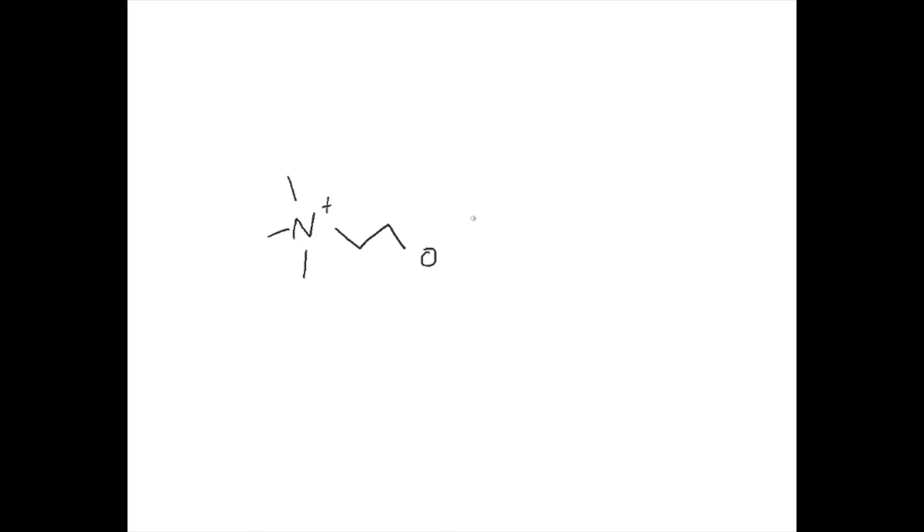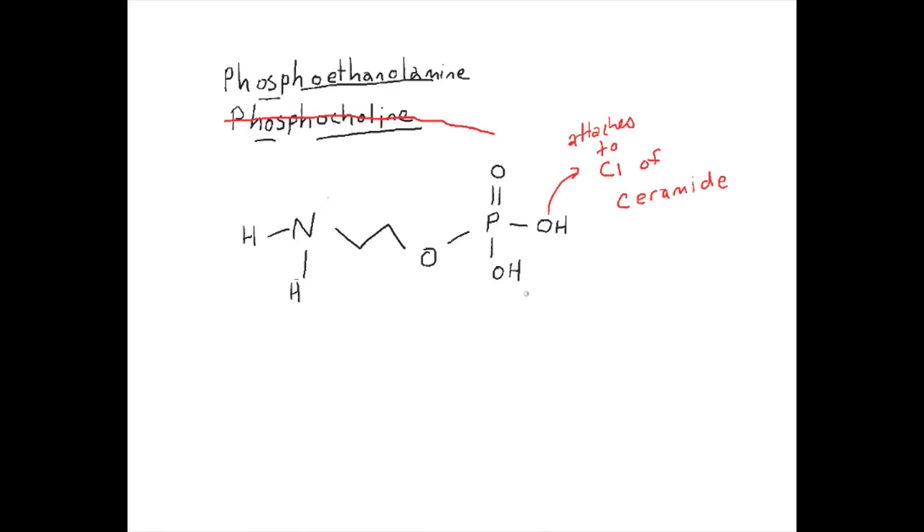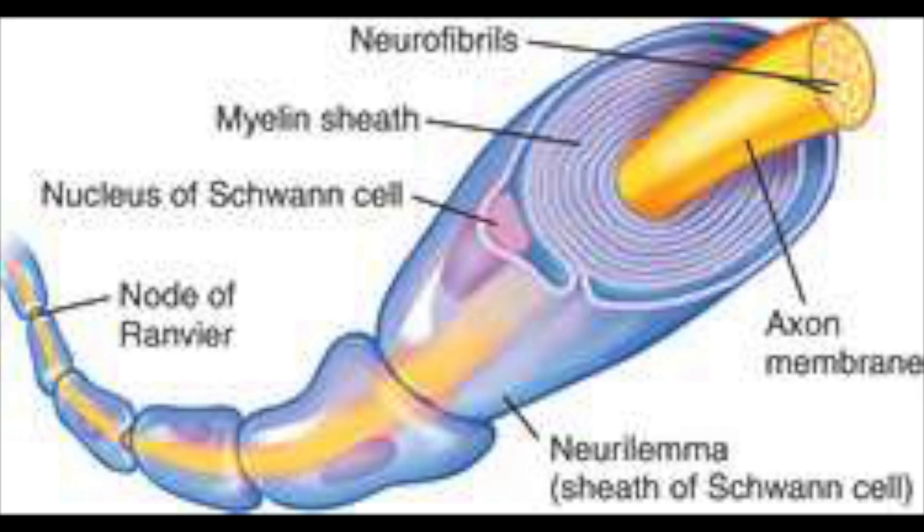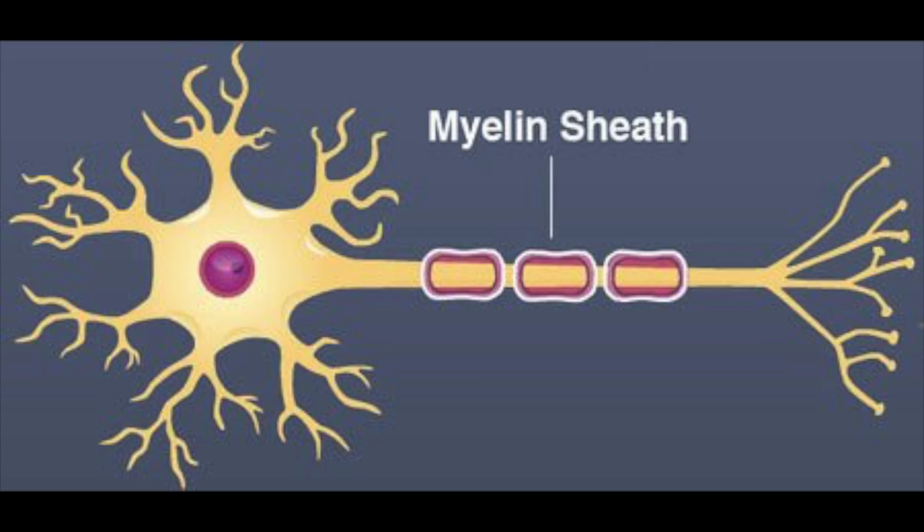Now the first group is something called a sphingomyelin. And what happens is you get something like phosphocholine or phosphoethanolamine attached to this polar head group. And instead of just calling it a phospholipid, the reason it's called a sphingomyelin is because in the brain, you have a membrane around the axons made of this fatty stuff.